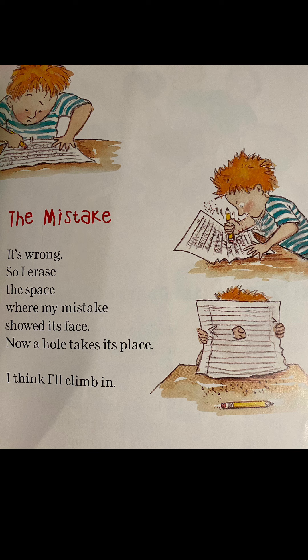This poem is called The Mistake. 'It's wrong. So I erase the space where my mistake showed its face. Now, a hole takes its place. I think I'll climb in.' I want you to think about what words from this poem we could add to our chart. You're going to take your turn now to analyze this poem and write the words on the chart that will help you explore the emotions that the author wants us to feel.